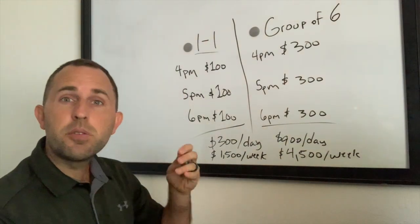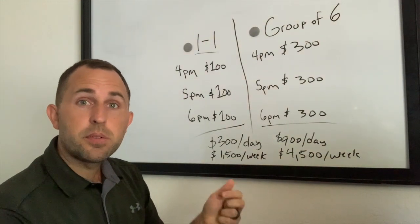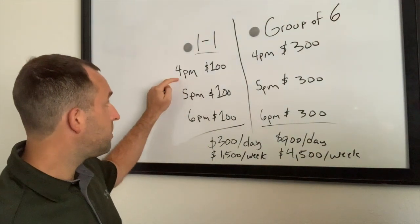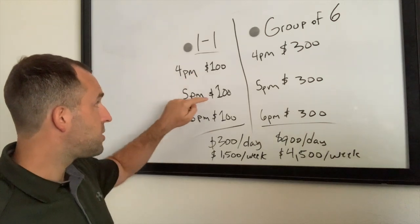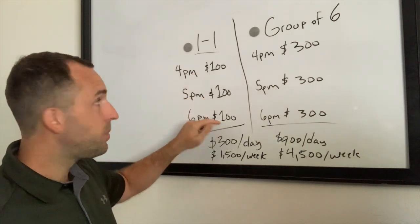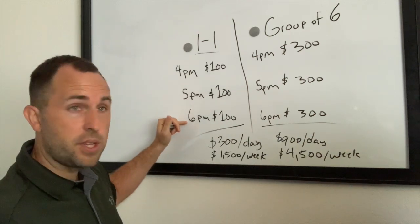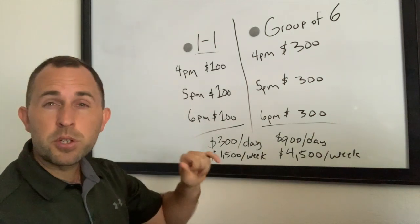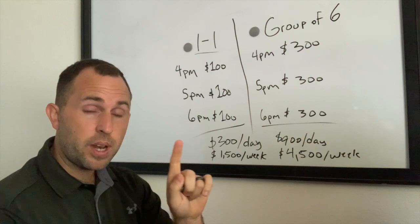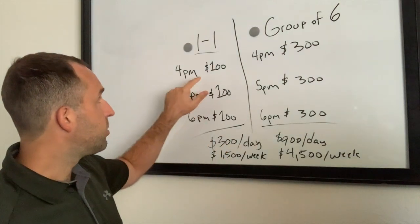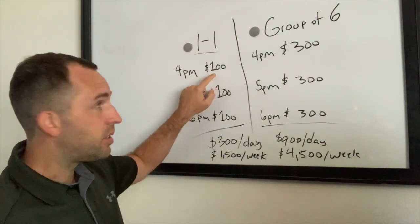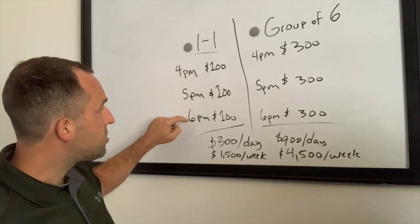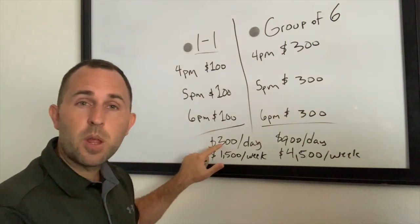So let's say Monday through Friday you have sessions from 4pm to 5pm, 5pm to 6pm, and 6pm to 7pm. So you have three sessions per day. And let's say with one-on-one training you're training one player, one athlete per hour. So based off this $100 per hour, with these three hours you're going to make $300 per day.